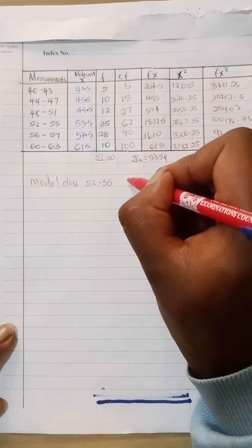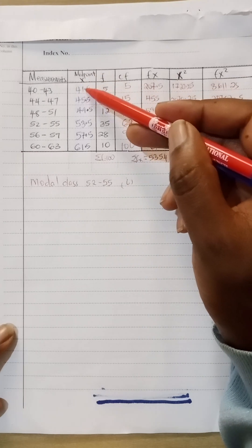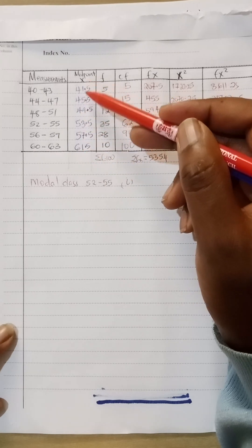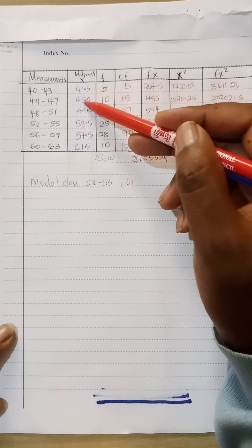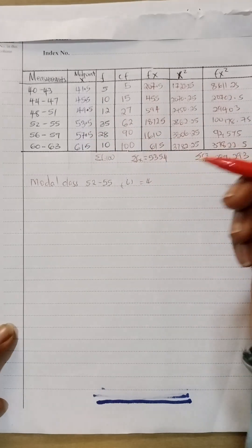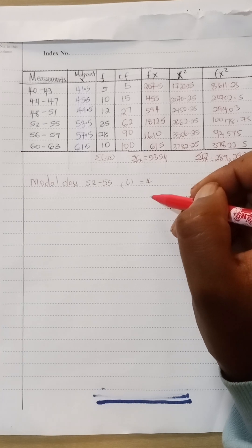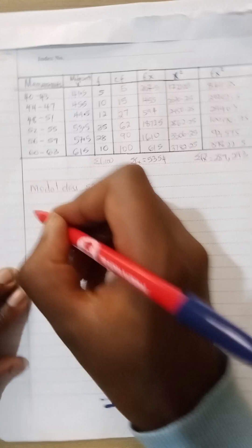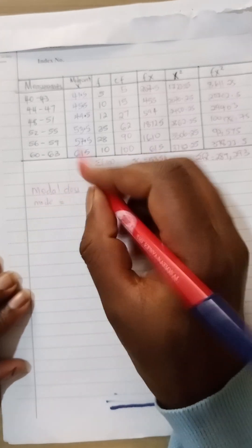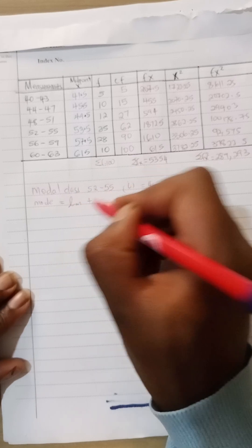Our class width is basically 45.5 minus this, the difference here should be 4 throughout. So if you add 4 you get this like that all the way. So our class width is 4. The formula for getting the mode is given by the lower class limit of that modal class plus delta 1 over delta 1 plus delta 2 multiplied by the class width.